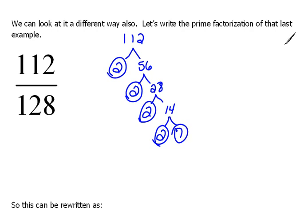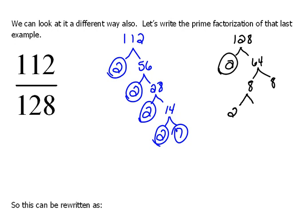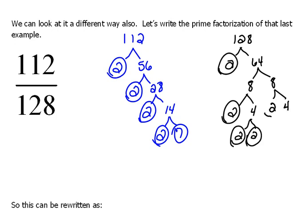Now let's look at 128. So, 128 would be 2 times 64, and 64 we could break down into 8 times 8. But 8 is not done — 8 could be 2 times 4, and 4 would be 2 times 2. We also have the other 8 that we need to finish out: 8 would be 2 times 4, and 4 would be 2 times 2. Remember, you have to keep factoring until you're down to nothing but primes.